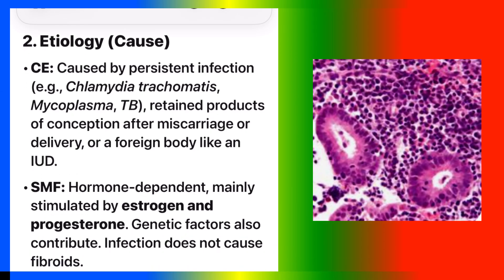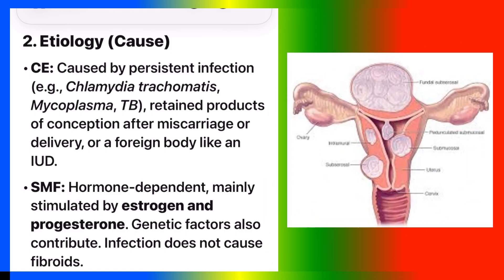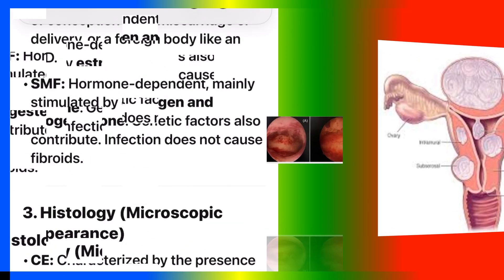Number two: etiology and cause. CE is caused by persistent infection, e.g., Chlamydia trachomatis, Mycoplasma, TB, retained products of conception after miscarriage or delivery, or a foreign body like an IUD. SMF is hormone-dependent, mainly stimulated by estrogen and progesterone. Genetic factors also contribute. Infection does not cause fibroids.